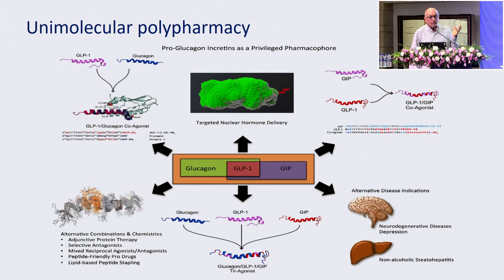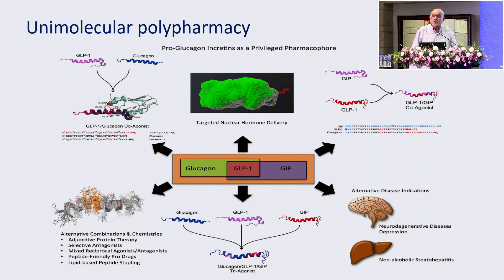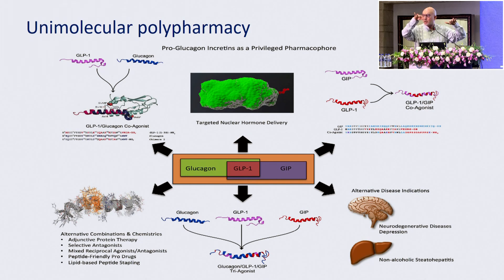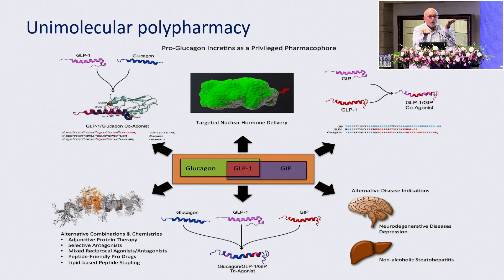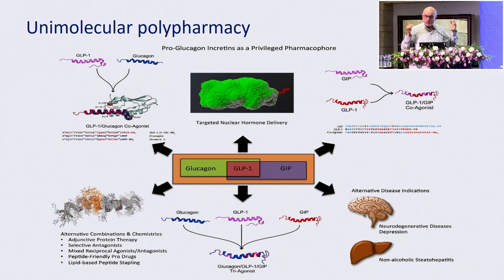Glucagon receptor antagonists are probably not going to work. On the other hand, there are drugs that will work at the glucagon receptor at different doses. Most of these polypharmacy drugs don't just work at GLP-1R — they work at the level of the GLP-1 receptor as well as the glucagon receptor. None of these drugs work only at the GLP-1 receptor. By modulating whether you're working at the glucagon receptor or the GLP-1 receptor, you can get different kinds of molecules. Tirzepatide, retatrutide — all of these are basically modulators of these receptors.